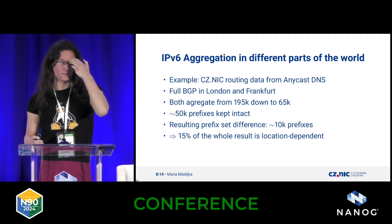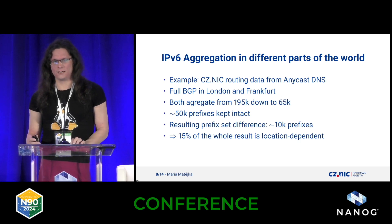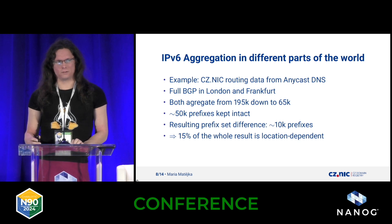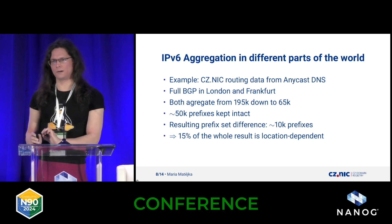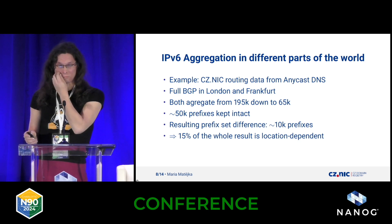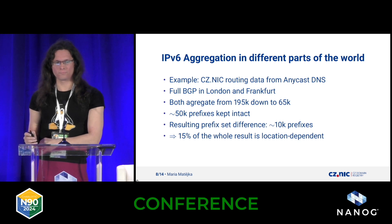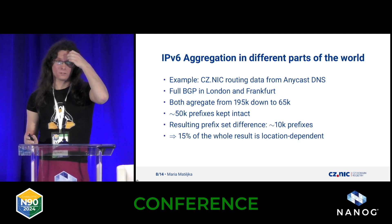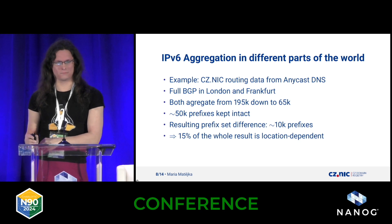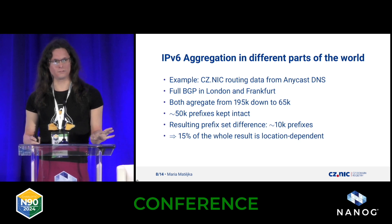For IPv6, we have many points of presence. I took London and Frankfurt, and both of those aggregated to about a third — from 200,000 to 65,000. Among those, about 50,000 prefixes were kept intact; these were the same in the original set and in the compressed set. The remainder got compressed into 15,000 routes. So we kept 50,000 prefixes intact and the other 150,000 were compressed by 90 percent. I did the same in Frankfurt and got almost the same result.